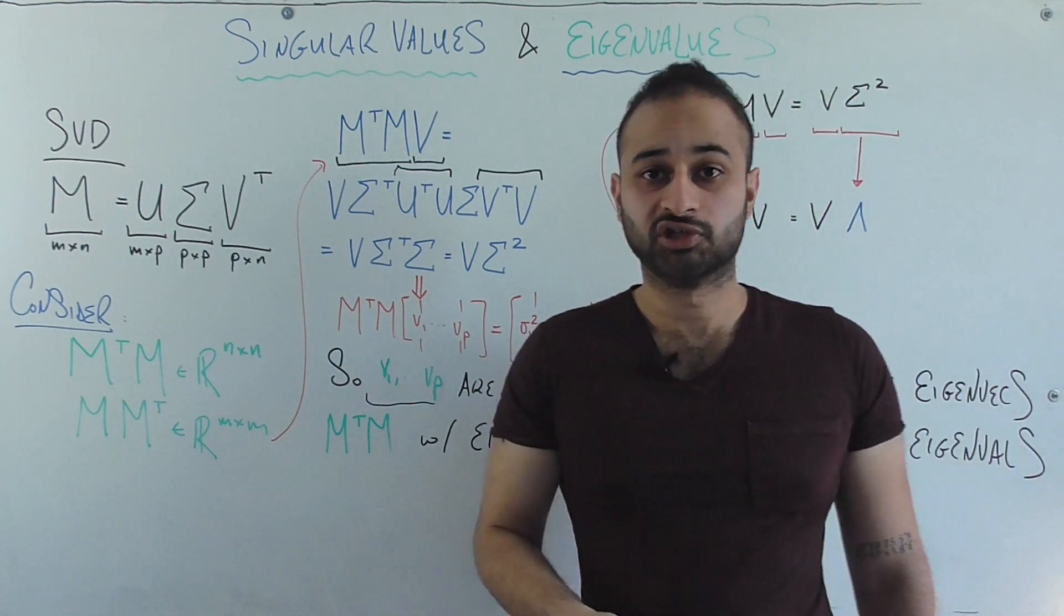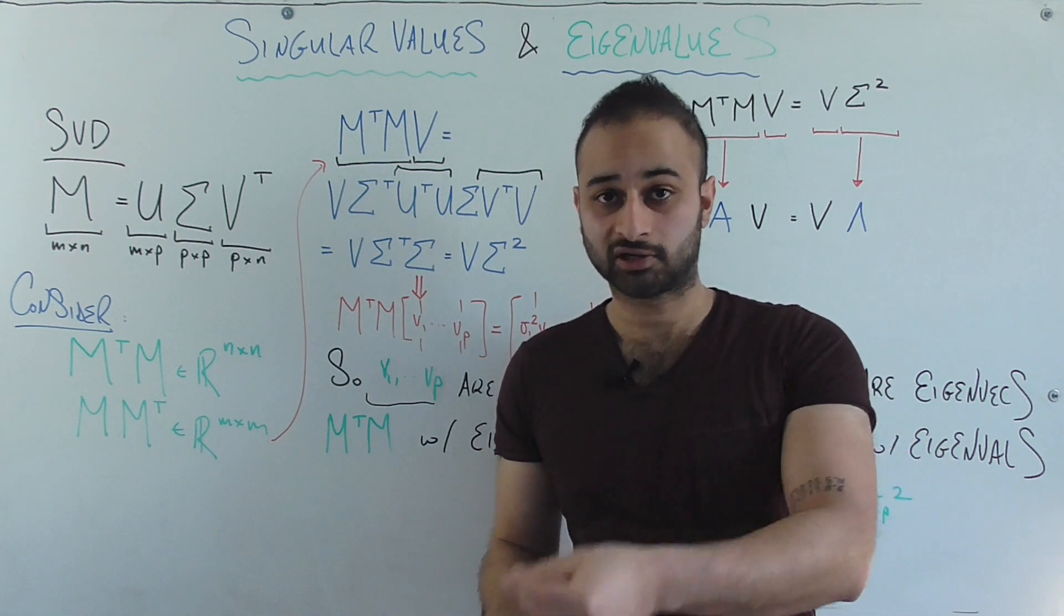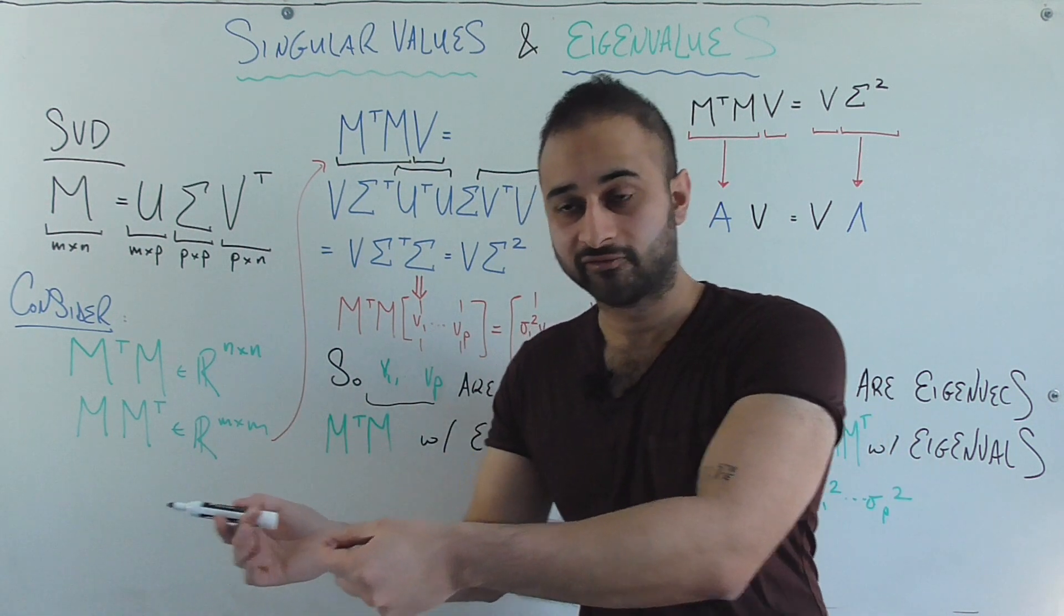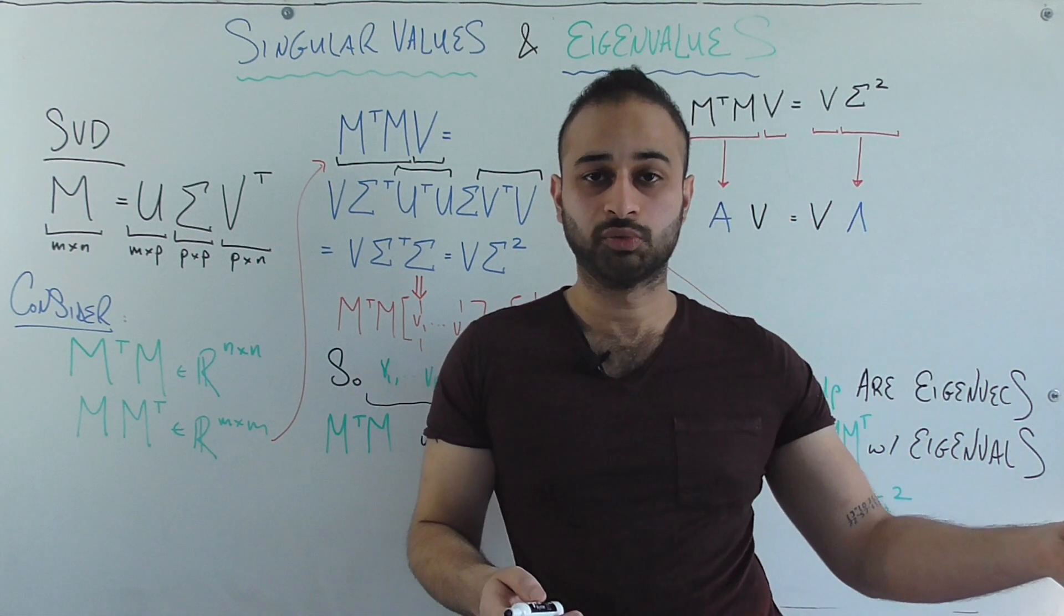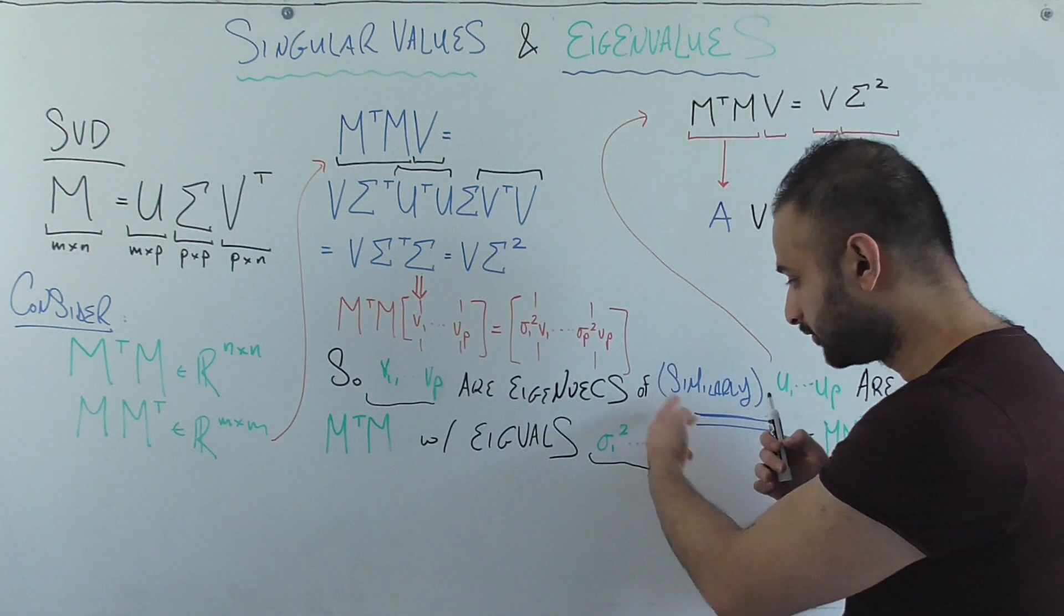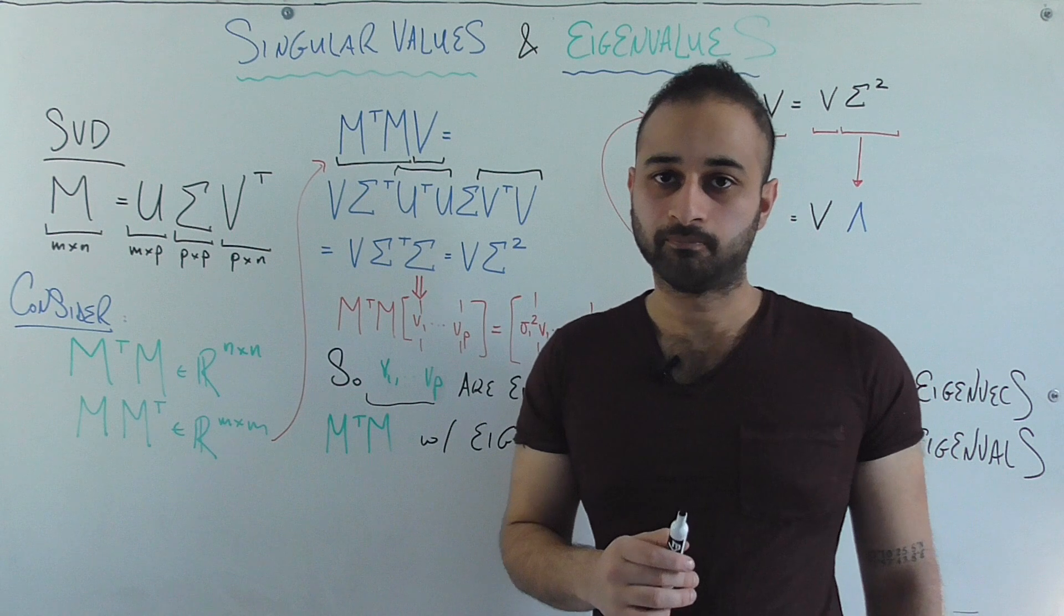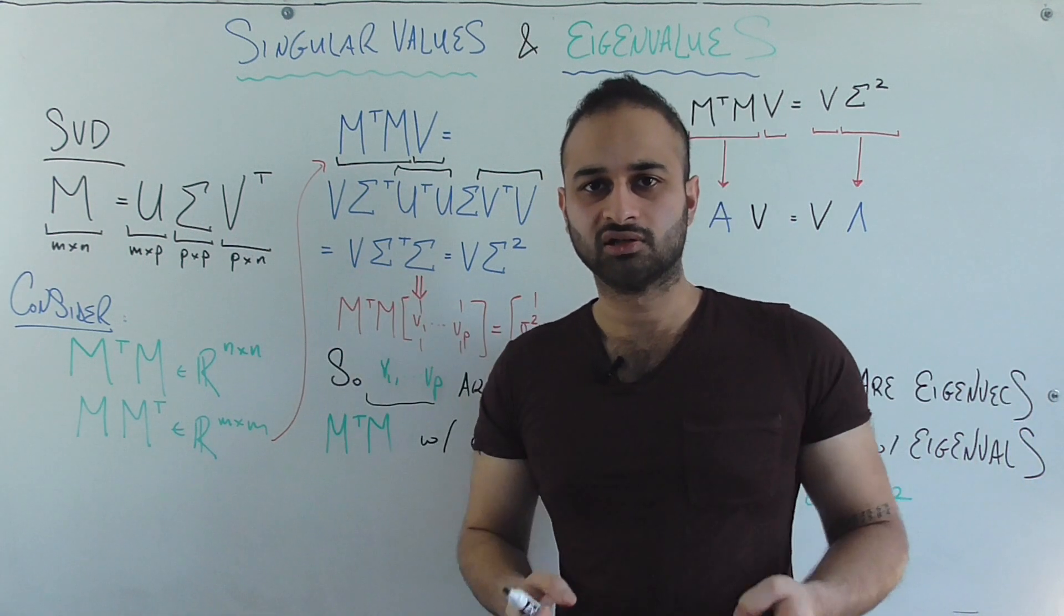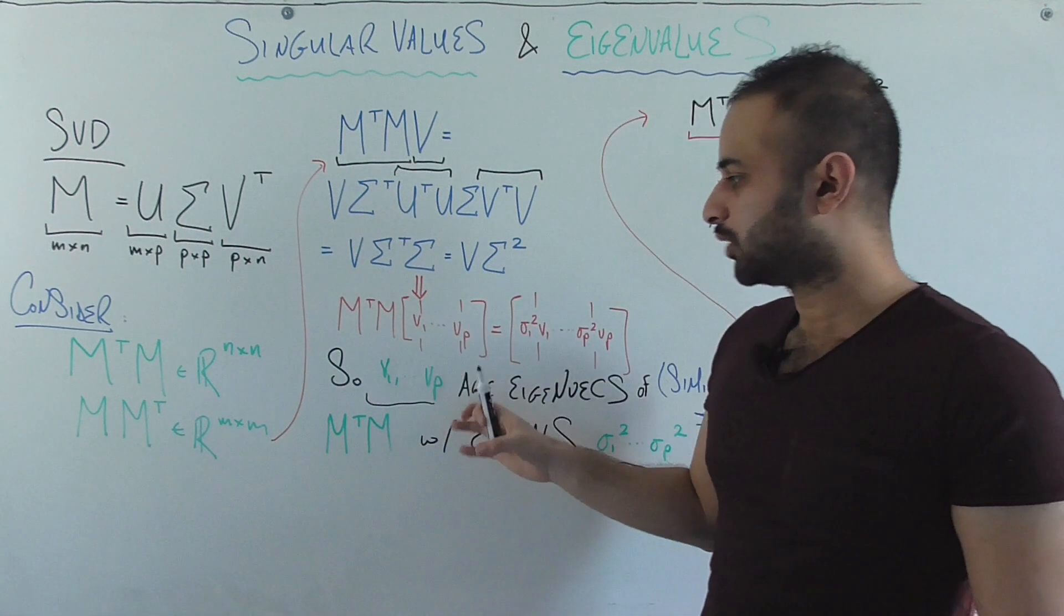V one through VP, which before we were just calling the right singular vectors, can also be thought of as eigenvectors, not of M itself, but of M transpose M. And sigma one through sigma P, which we were calling the singular values up until now, we can call the square of them the eigenvalues of M transpose M. So that's this powerful link between singular values and eigenvalues. They're not really two separate entities, but they're linked in this way.